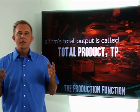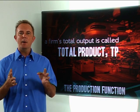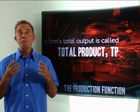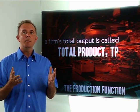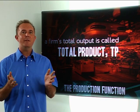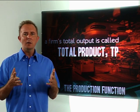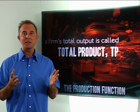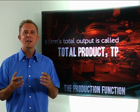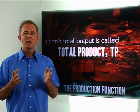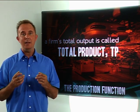The production function shows us the maximum amount — the maximum output — a firm can produce with different combinations of inputs. The total output of a business, everything it produces, is called the total product or TP.